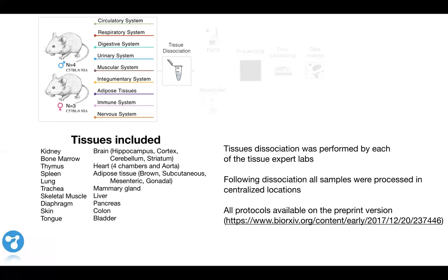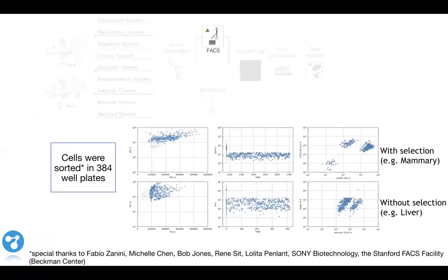Once each of the collaborating labs received these tissues, they went back to their own space and dissociated the tissues with a protocol specific to maximize both cell viability and cell recovery. Then all the cells were brought back to centralized locations for downstream processing. I'd like to highlight that all the protocols we use for performing tissue dissociation up to sorting and cDNA preparation are available on the preprint version on bioRxiv.